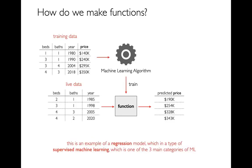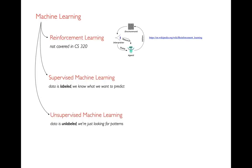The example I've given is a regression model, which is more broadly a type of supervised machine learning — one of the three main categories. The three main areas of machine learning are: reinforcement learning, where you make a series of decisions trying to optimize some reward (like a robot picking up coins); supervised machine learning; and unsupervised machine learning. We won't be doing reinforcement learning in this class. We'll focus on supervised and unsupervised. Some people say there's also a fourth category called semi-supervised, but we won't cover that.